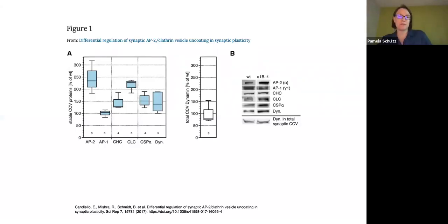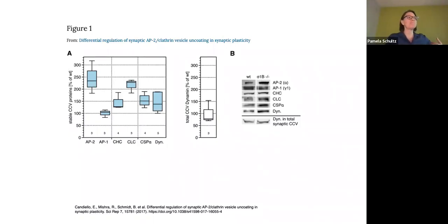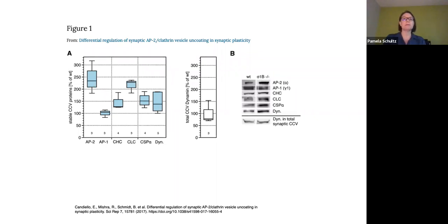To prepare for this presentation I went online to look at the types of graphs people are already producing with DataGraph. DataGraph has been out for a number of years, so there are many publications that have used it for their graphics. One example was published in 2017 in Nature Scientific Reports, which is an open access journal.